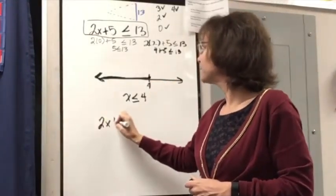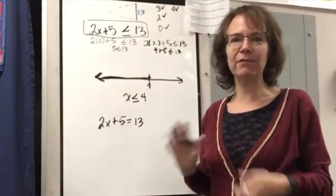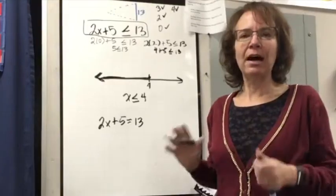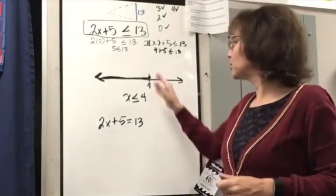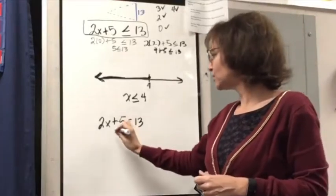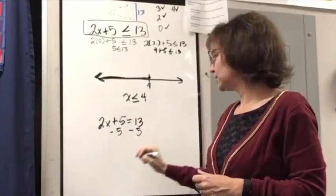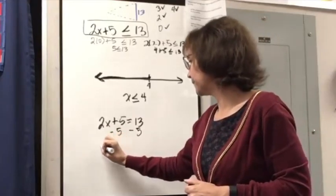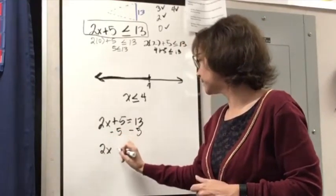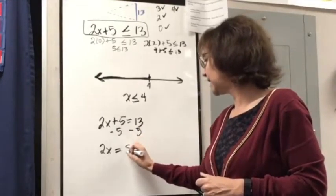So 2x plus 5 equal to 13 is actually going to give me the highest or the lowest value, the boundary where I'm looking at whether I go to the left or the right in this case. So if I subtract 5 from both sides and solve this equation using the subtraction property of equality, or addition property if you want to think about negative numbers.